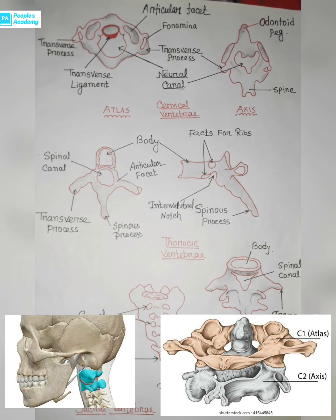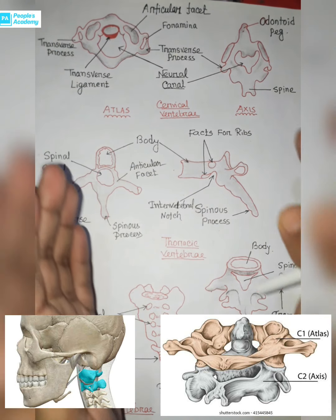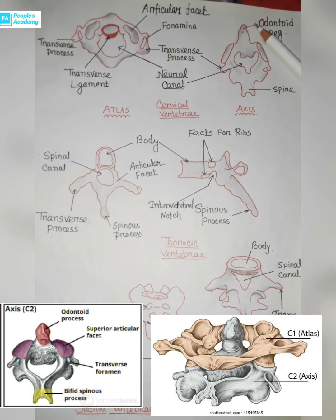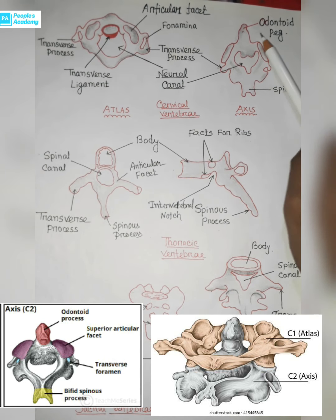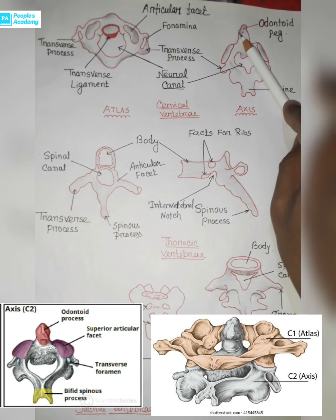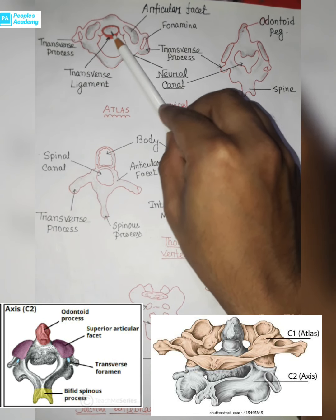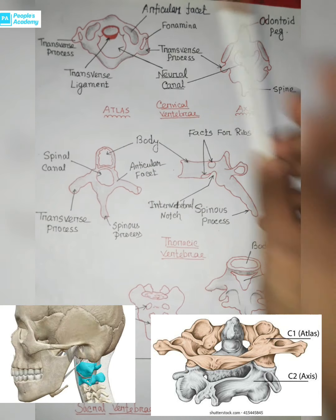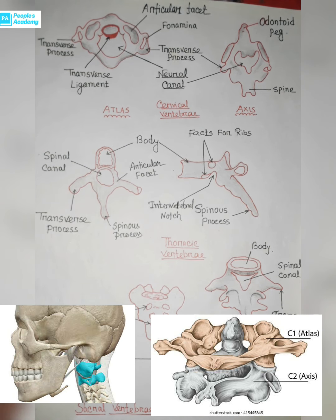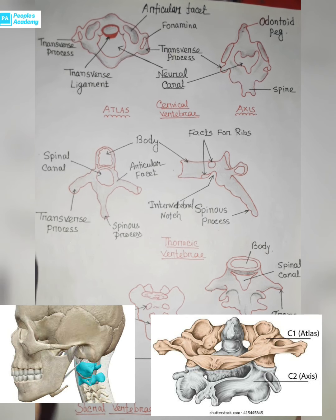A process of bone called the odontoid peg rises from the axis, which articulates with the back of the anterior arch of the atlas and is held in position by the transverse ligament. Atlas moves around the odontoid peg of the axis, forming a pivot joint at which the head rotates.